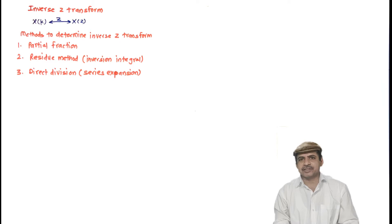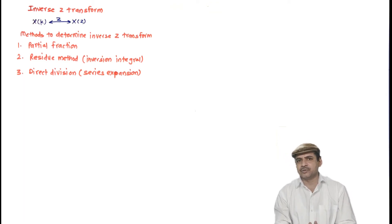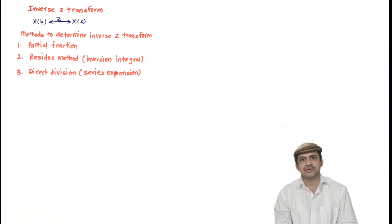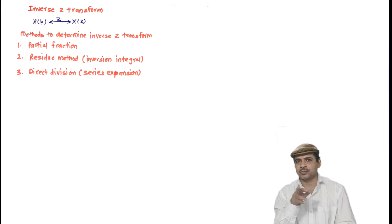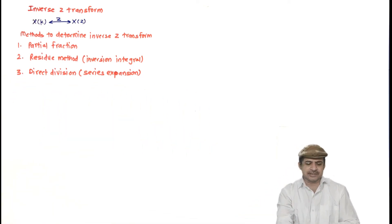In this lecture we will see the partial fraction method and solve some problems. In the partial fraction method, for a given Z-domain function we convert it into partial fractions or partial fraction expansion, so that it will be in the form of Z upon Z minus A. Then we use the table of Z-transform pairs between X of K and X of Z, and using some properties we will get X of K.